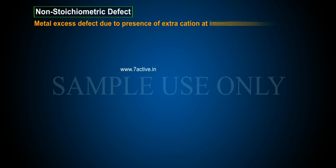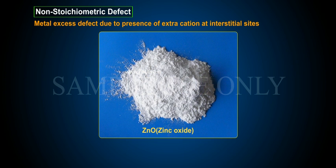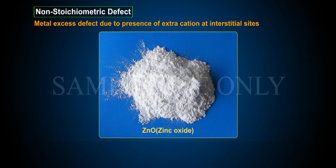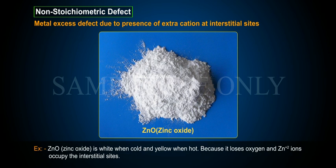Metal excess defect due to presence of extra cation at interstitial sites. Example: ZnO (zinc oxide). This is due to the movement of metal ions to interstitial sites and the electrons to neighboring interstitial sites. ZnO is white when cold and yellow when hot, because it loses oxygen and Zn2+ ions occupy the interstitial sites.